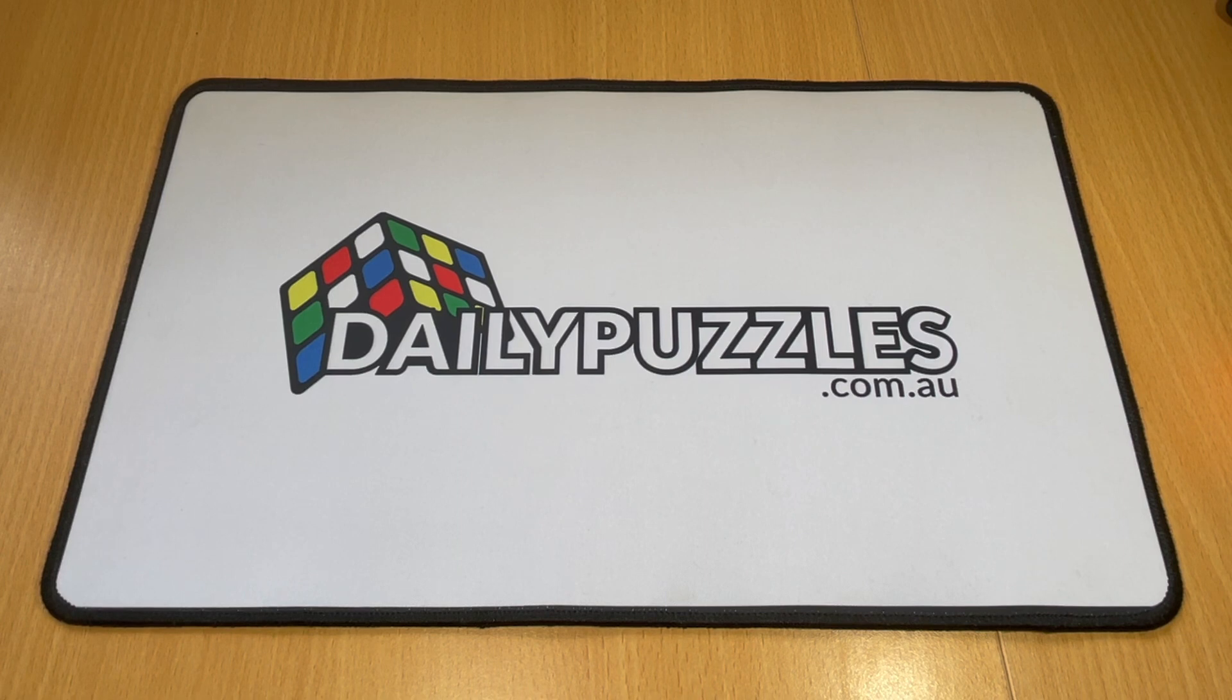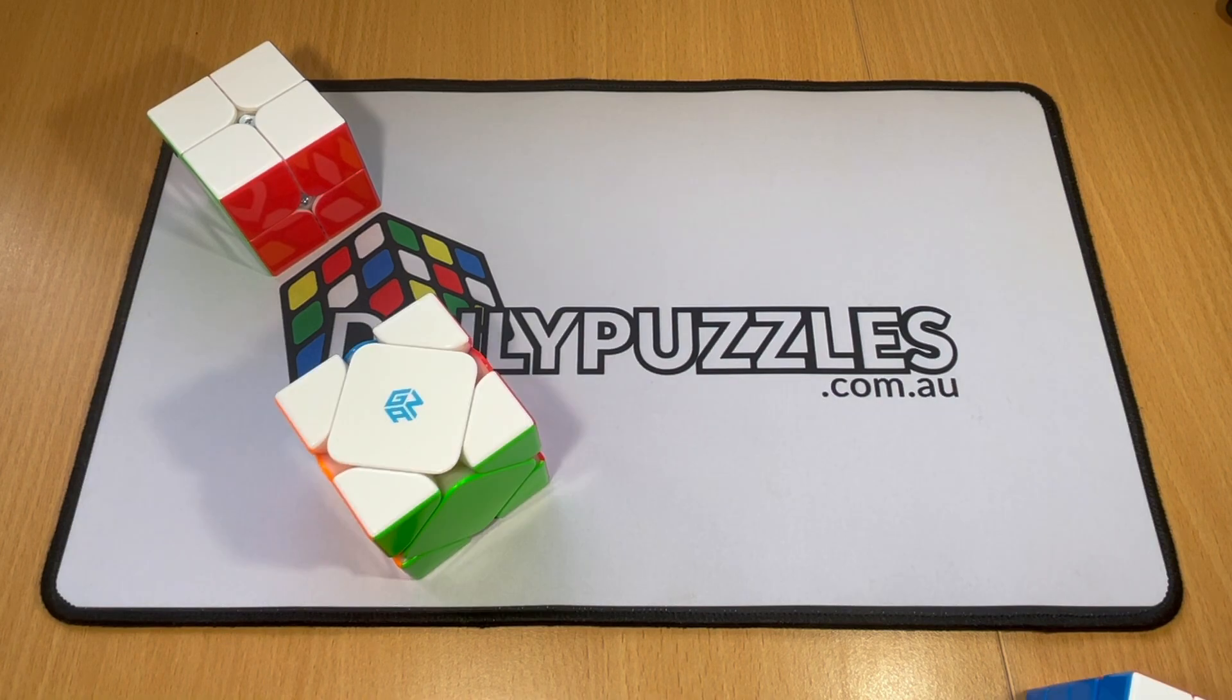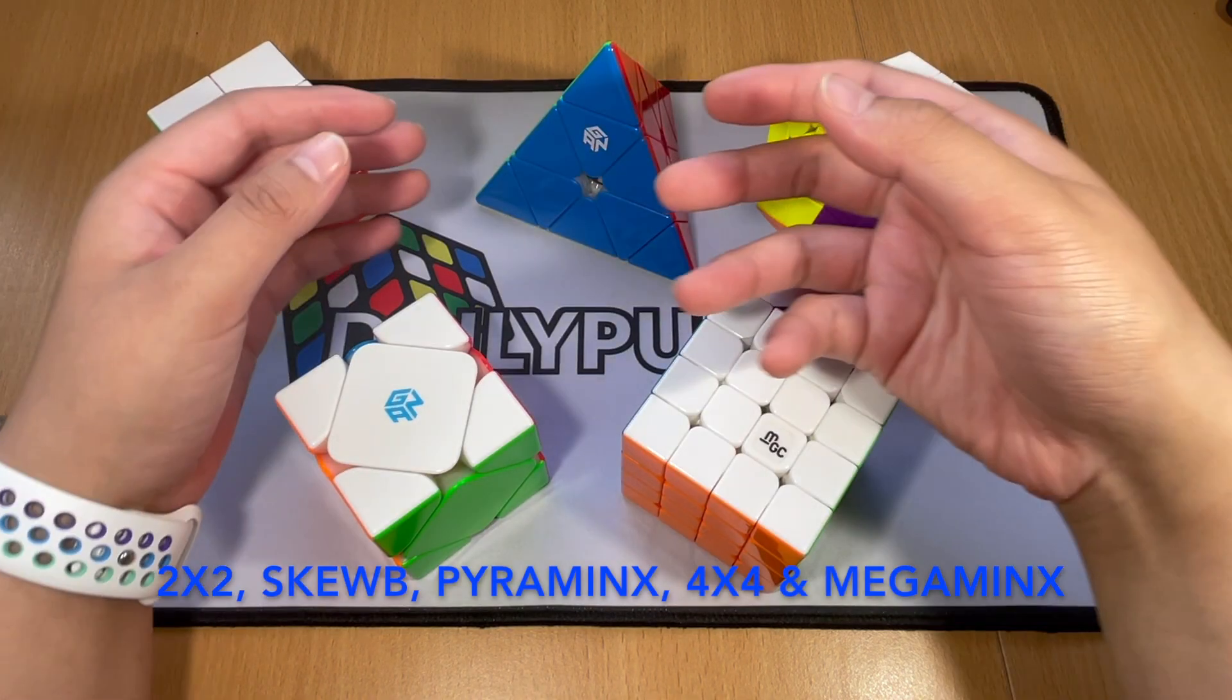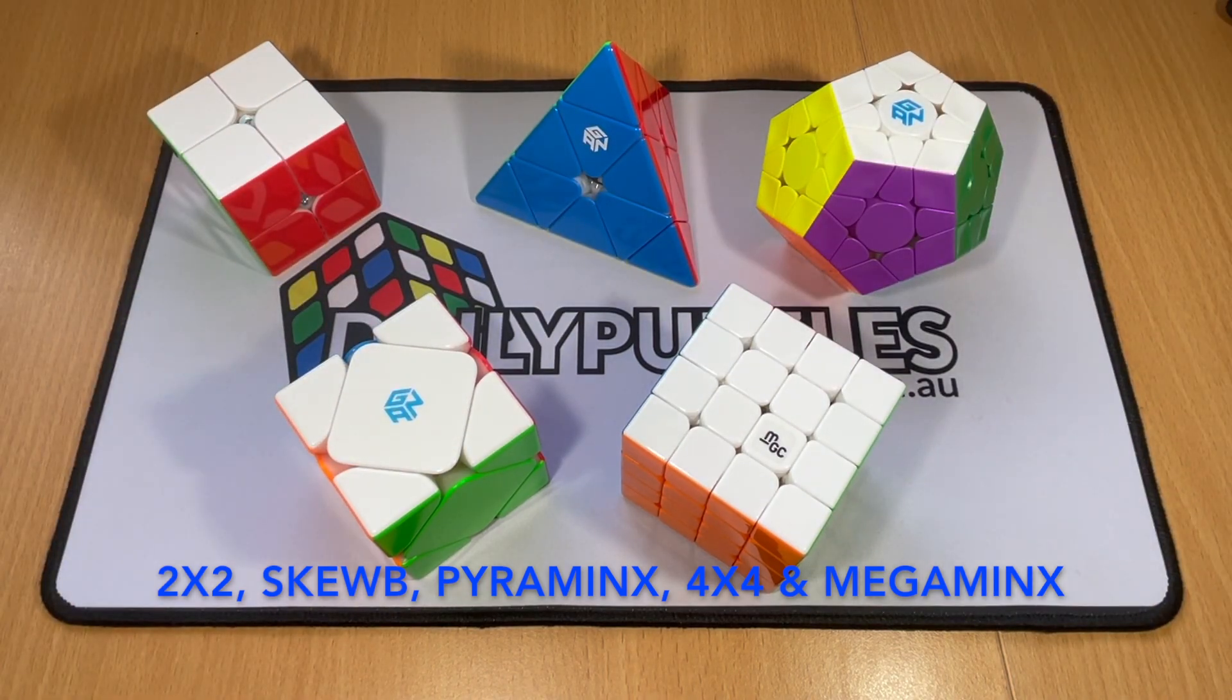I'm going to go through their names first and then go into each one individually: 2x2, Skewb, Pyraminx, 4x4, Megaminx. These are the five puzzles I recommend for beginners to learn.